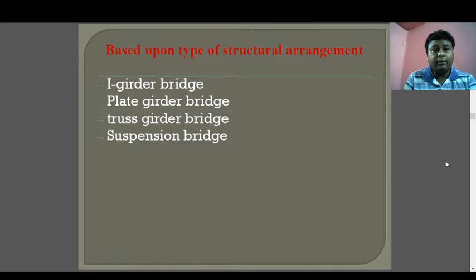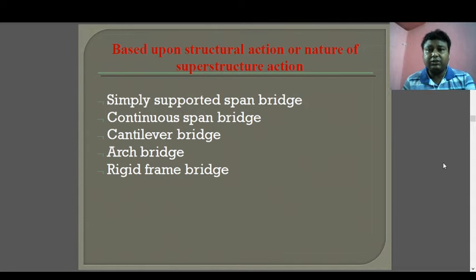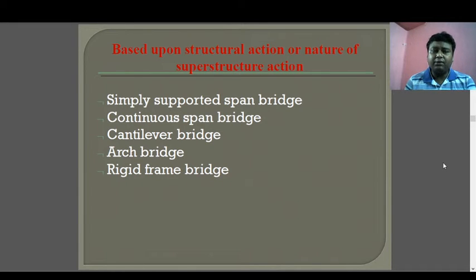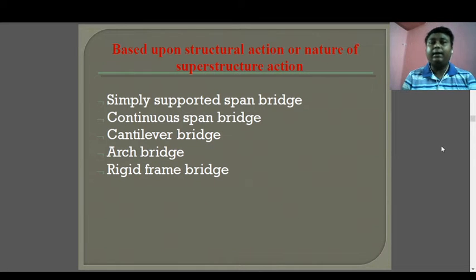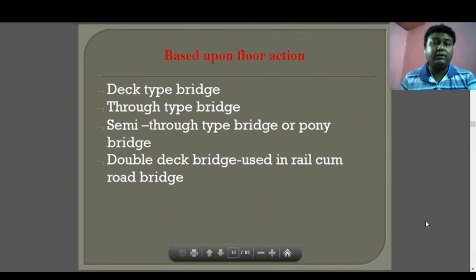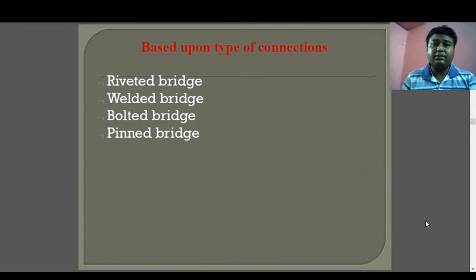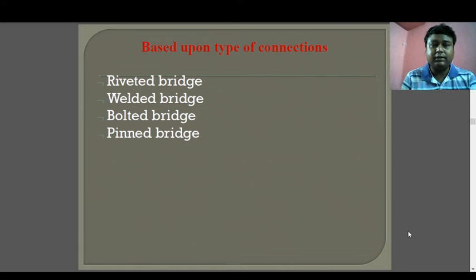Based on structural arrangement, bridges are categorized as I-girder, plate girder, cross girder, and suspension bridges. Based on structural action, there are simply supported span bridges, continuous span bridges, cantilever span bridges, arch bridges, and rigid frame bridges. Based on connection type: riveted, welded, bolted, and pin bridges. The Howrah Bridge is primarily a bolted bridge — the connections are joined using bolts and nuts.